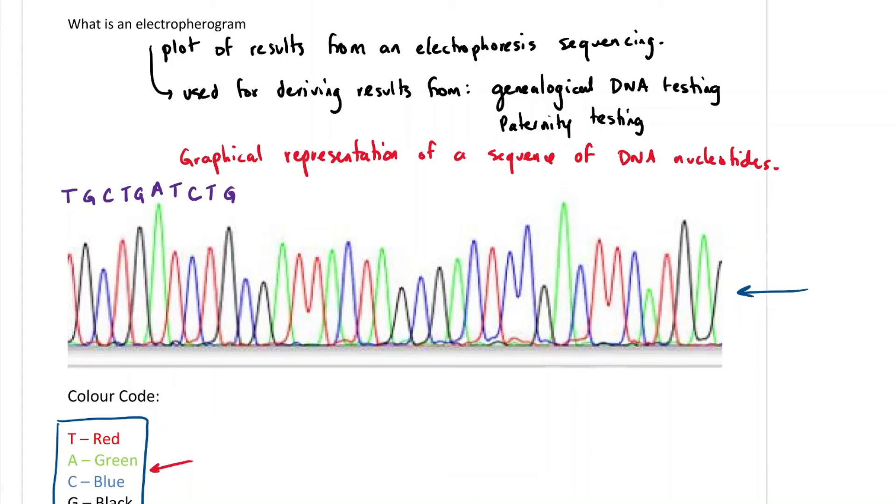So in terms of an electropherogram, this is all you need to know. Now, for ISB students, you have an assignment that you have to work on. For that assignment, you'll be given three unknown electropherograms for which you have to figure out the sequence. That's going to be your practice for trying out the electropherograms.